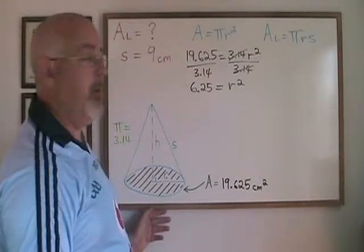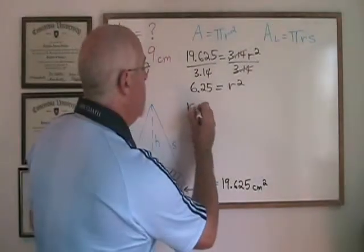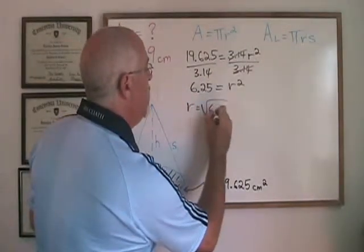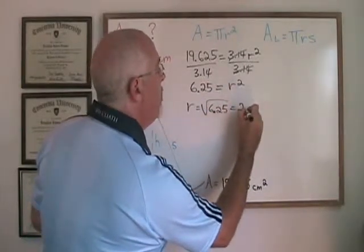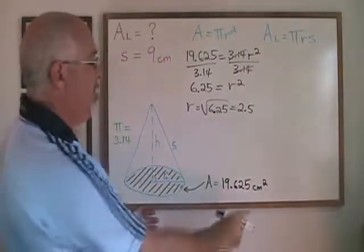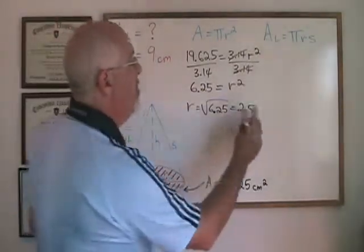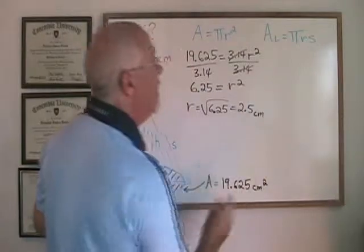But we don't want r squared, we want r. R is going to be equal to the square root of 6.25 which is 2.5. And because we were dealing with centimeters squared, the radius is 2.5 centimeters in length.